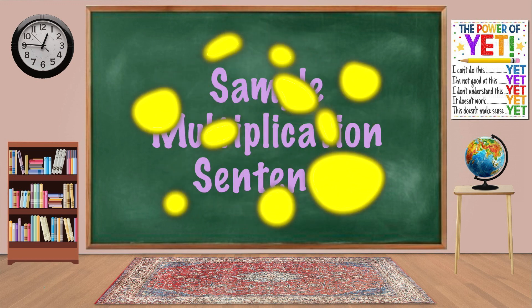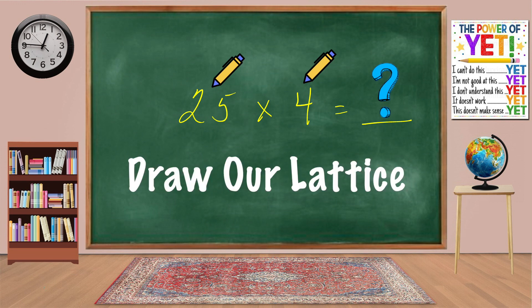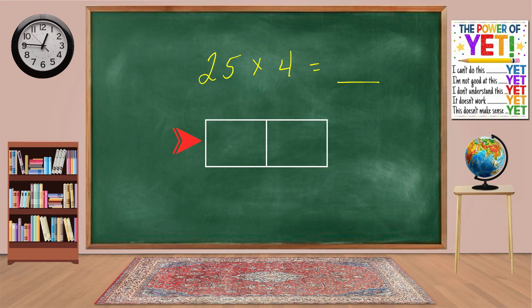Here's a sample multiplication sentence. 25 times 4 equals what? First, let's draw our lattice. We'll have one row and two columns. Next, we'll divide the boxes in our lattice in half using diagonal lines. Like this. Now, let's plug in our numbers. 25 along the top or on the right.